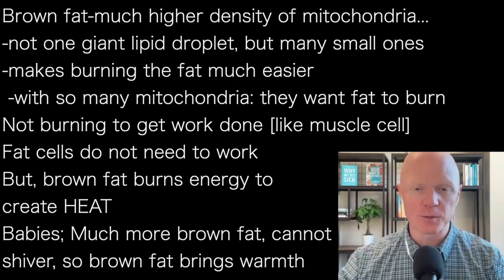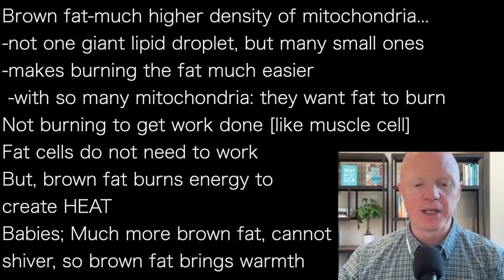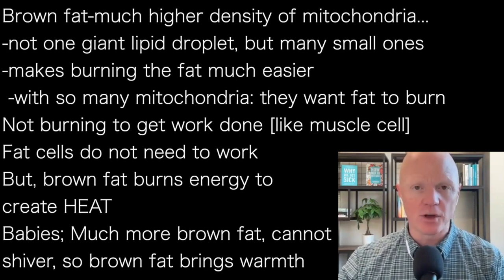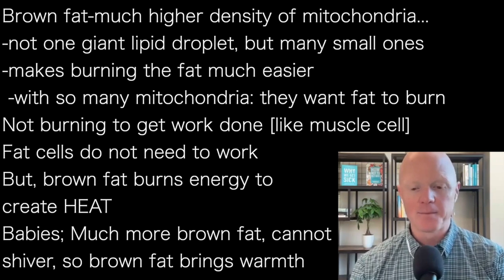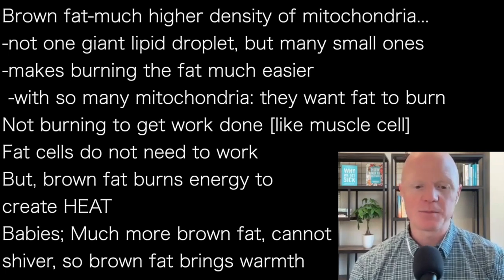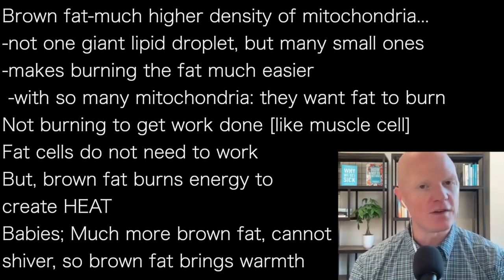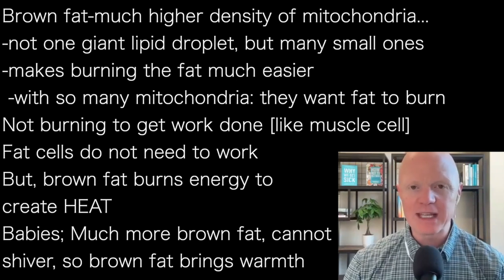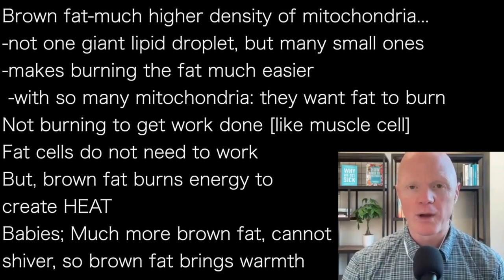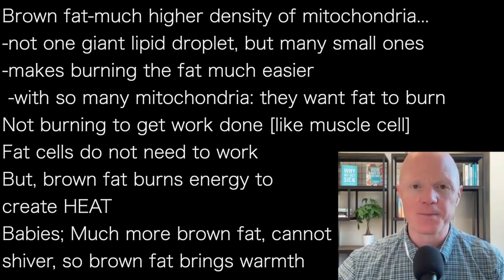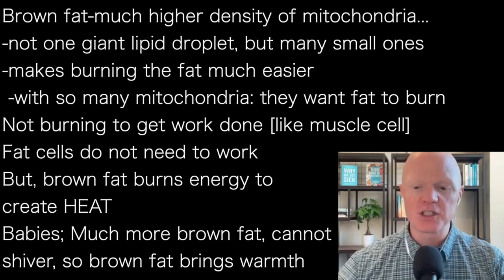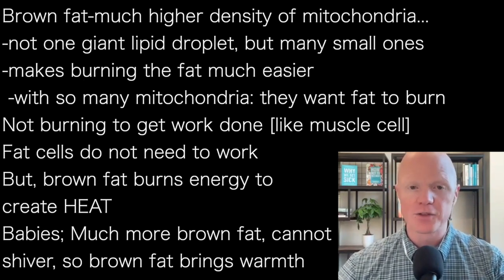One interesting difference when you compare babies to adults: babies have much more brown fat. This is probably an adaptive mechanism because a newborn baby also has very little muscle. So if a baby gets cold, it doesn't really have a good way to warm up. An adult can shiver — as the muscles start twitching, they generate heat from those biochemical reactions. But a baby can't shiver, so the baby has much more brown fat, which enables it to stay warm without the need for shivering.